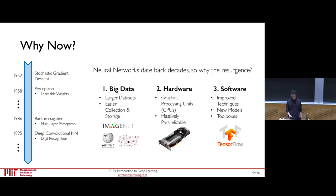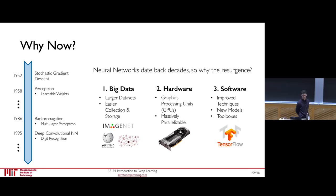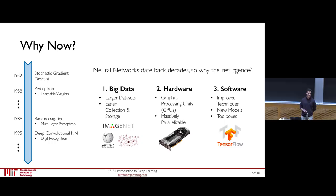The fundamental building blocks of deep learning — neural networks — have actually existed for decades, so why are we studying this now? There are three key points. First, data has become much more pervasive; we're living in a big data environment and these algorithms are hungry for data. Second, these algorithms are massively parallelizable and benefit tremendously from modern GPU architectures. Finally, due to open-source toolboxes like TensorFlow, building and deploying these algorithms has become so streamlined that we can teach it in a one-week course.